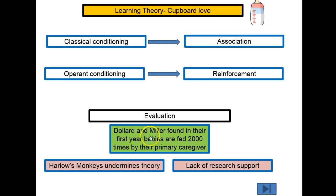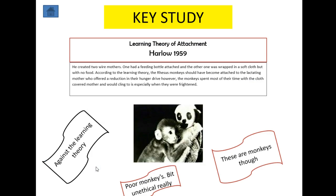For the evaluation of learning theory, we have one strength and two weaknesses. As a strength, Donand and Miller found that in their first year, babies are fed 2,000 times by their primary caregiver — not the strongest evidence, but it's what we have. We also have Harlow's monkeys as a key limitation.